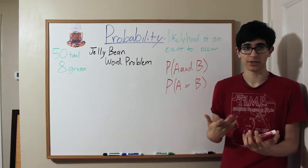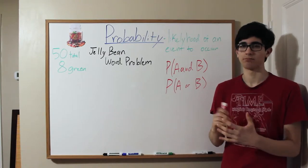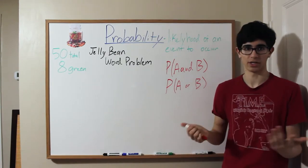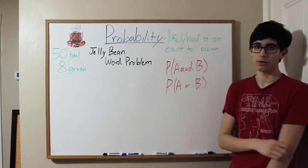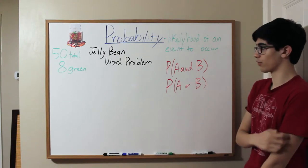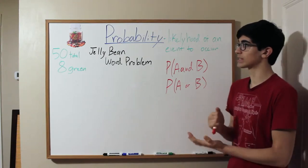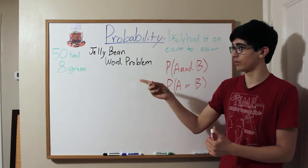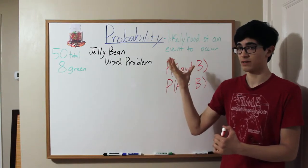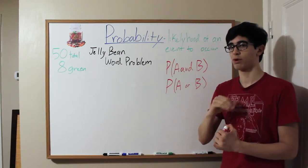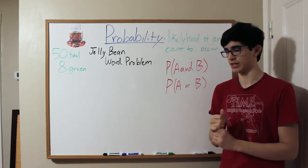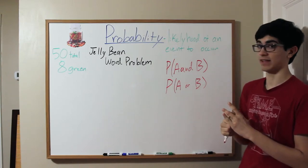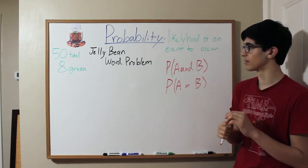So you're eating three jelly beans, and you could have a green jelly bean, you could have no green jelly beans, and you either find out or you don't. But we're going to discuss: what is the probability that if you have three jelly beans, 8 of which are green out of 50, what is the probability that you find out you're allergic to these green jelly beans? So what is the probability that you have at least one green jelly bean?